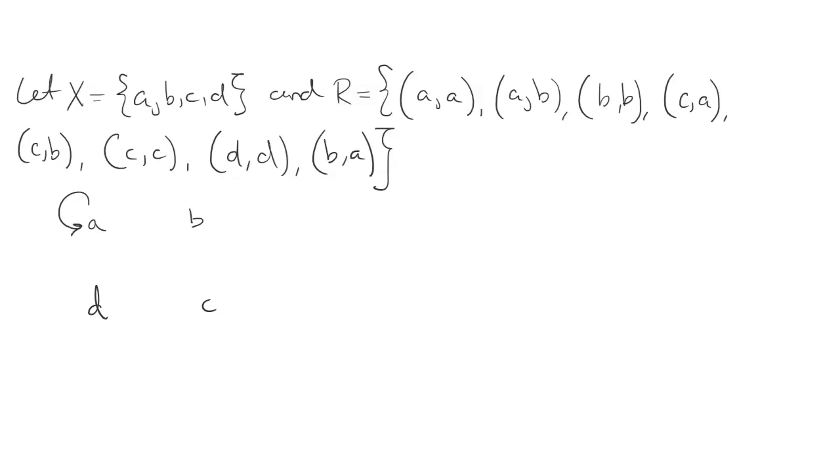A is going to be related to itself, B is going to be related to itself, C is going to be related to itself, and D is going to be related to itself. Then we're also going to have A related to B, B related back to A, C related to B, and C related to A.